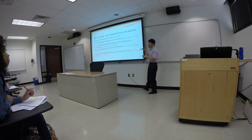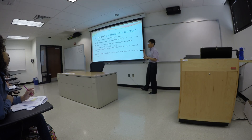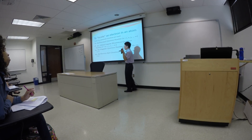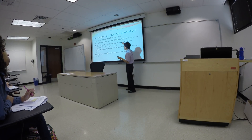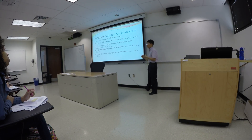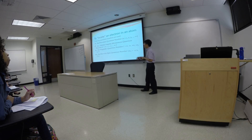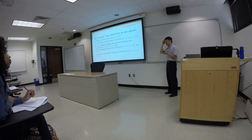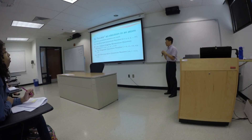No two electrons in any atom will have an identical set of four quantum numbers. Two electrons may have the first three quantum numbers identical, but the last one is going to be different — one of them is positive one-half and the other has to be negative one-half, spinning in opposite directions. Each electron in any given element has a unique set of quantum numbers.